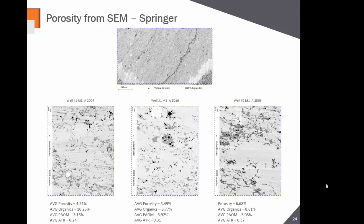Lots more organic material in this section. Organic volume on the left is 10.26%, 8.77% and 8.61% on the next two images. ATRs range from about 0.25 to 0.37. These are excellent quality rocks. People familiar with digital rock analysis are very happy when they see features like this — a lot of porosity for shale at four to five percent, in some cases seven percent, and most of that porosity is organic matter-hosted, meaning oil-wet pores contributing to production. The challenge will be completions and steering to stay within the section, as the Springer is not that thick.